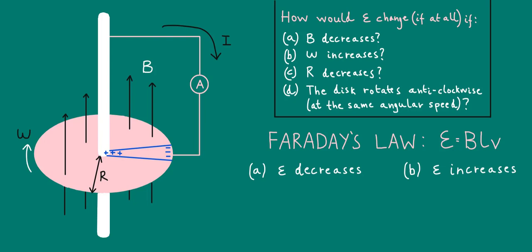For part C, the radius of the disk is the length of the sector we've been considering. So it naturally makes sense to identify with L, the length of the wire in Faraday's law. As you might expect, if the radius decreases, the induced EMF will decrease as well.